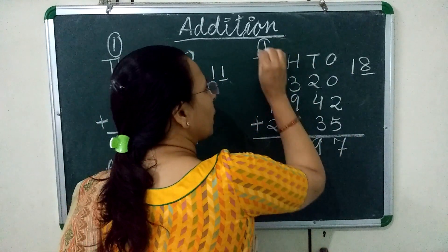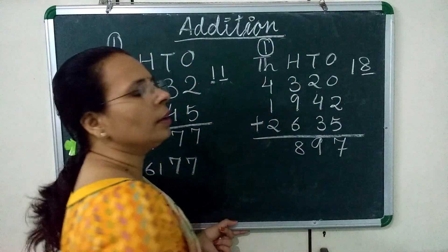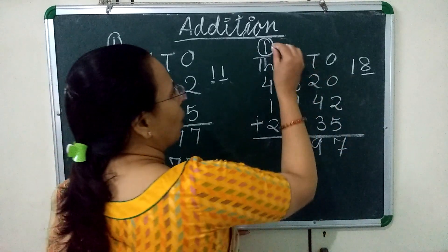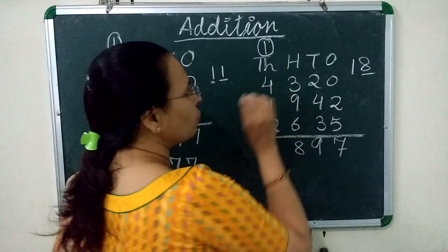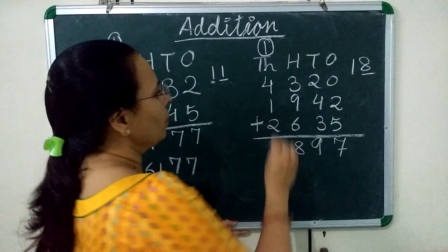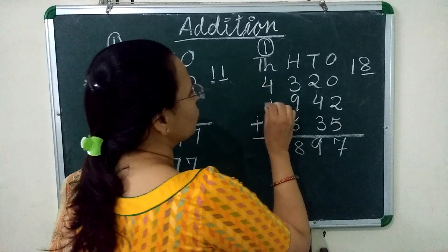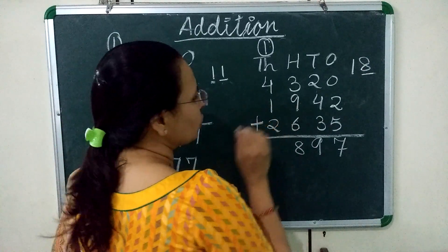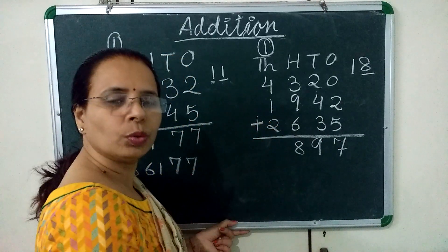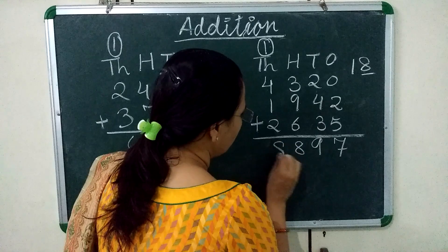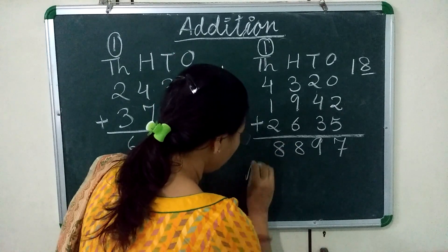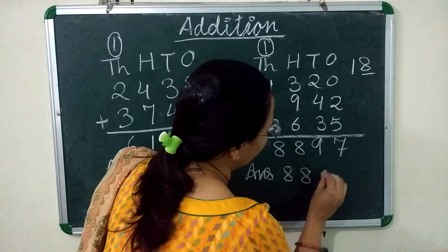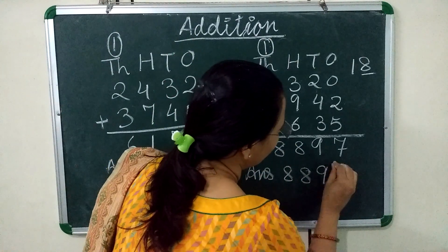At the 1000's place: 1 (carry) plus 4 is 5, 5 plus 1 is 6, and 6 plus 2 is 8. So our answer is 8,897.